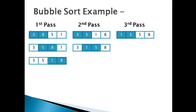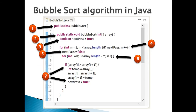Let's discuss the Java code to implement bubble sort in steps. Step 1: create a Java class — in our case it's BubbleSort. Step 2: create a static method taking in an unsorted integer array — in our case the method name is bubbleSort. Step 3: create a boolean variable to test whether the next pass is required or not.